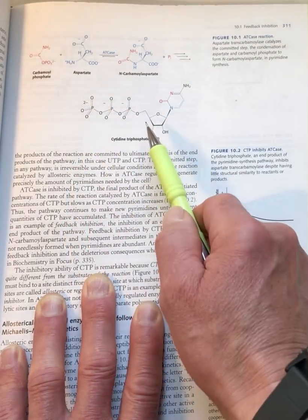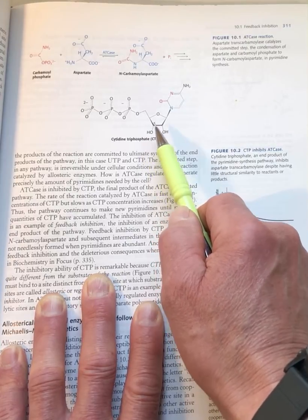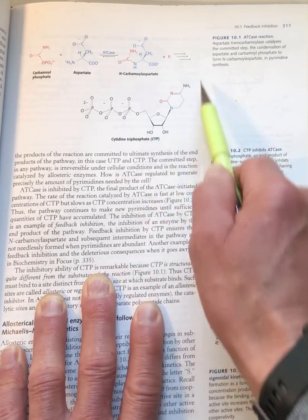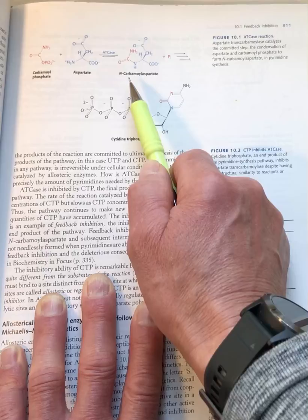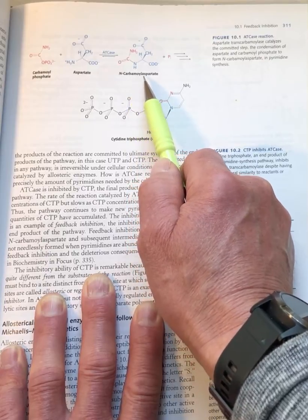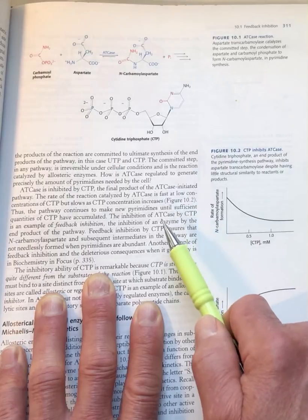We call this type of regulation feedback inhibition. The biosynthetic pathway feeds back and informs the enzyme to stop producing this intermediate N-carbamoyl aspartate because we don't need to make any more CTP at this point in time.